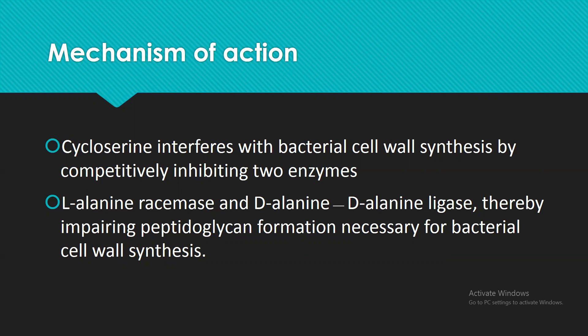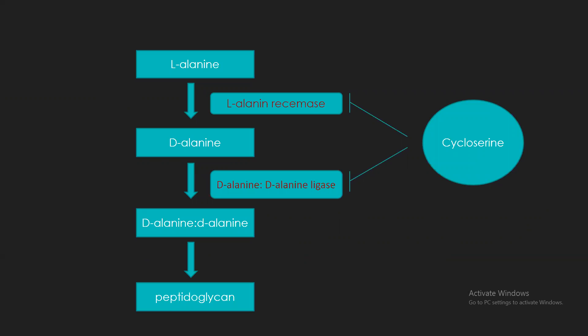Those two enzymes are L-alanine racemase and D-alanine-D-alanine ligase. These enzymes are inhibited by cycloserine, and the result is impairment of peptidoglycan formation, which is necessary for bacterial cell wall synthesis. As you can see, cycloserine shows its inhibitory action on these two enzymes: L-alanine racemase and D-alanine-D-alanine ligase.